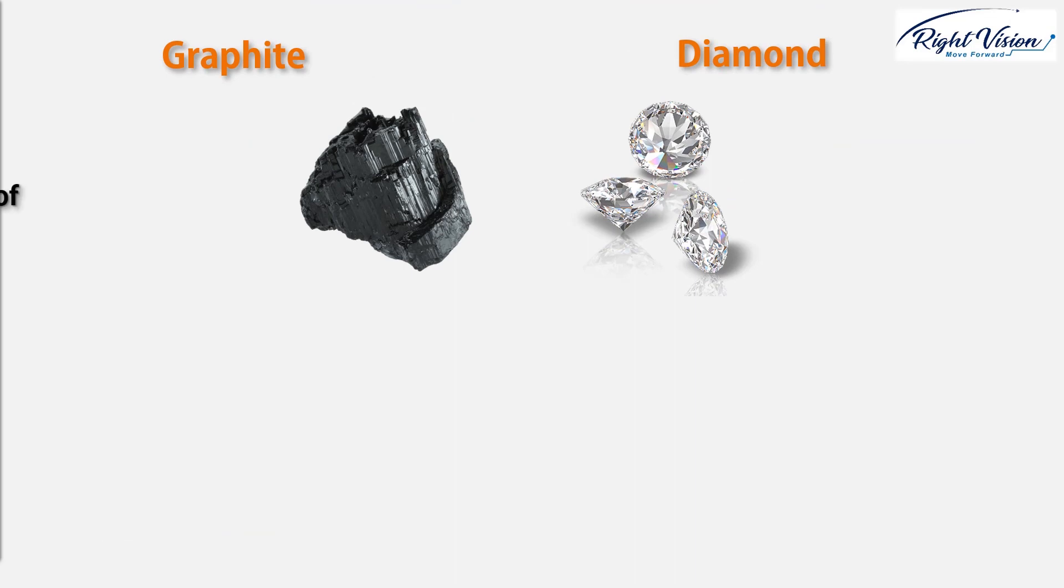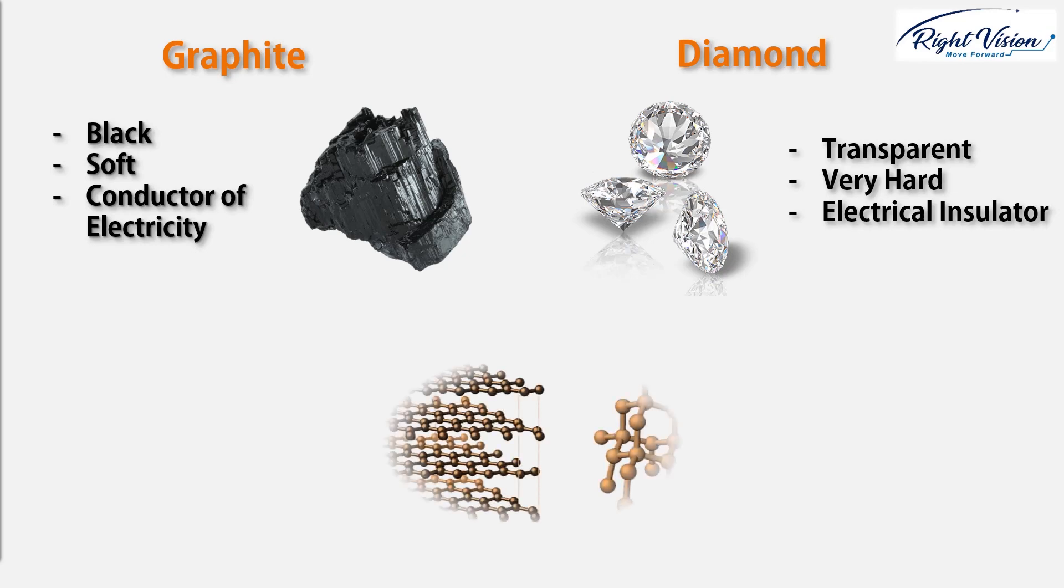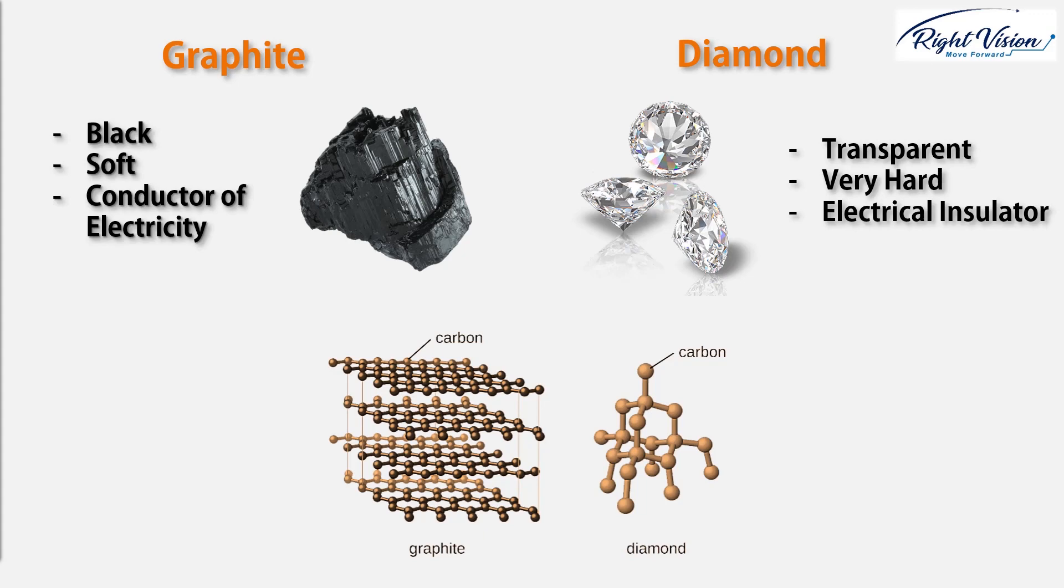For example, consider graphite and diamond. Graphite is black, soft, conductor of electricity, but diamond is transparent, very hard, and electrically insulated. So, what's going on between these two, graphite and diamond? Well, surprisingly, as some of you may know, both these atoms are made of carbon atoms. However, they contain totally different characteristics. So, why is that? Well, the answer lies on the fact that how the carbon atoms are connected together.